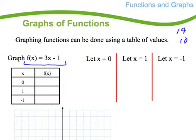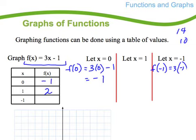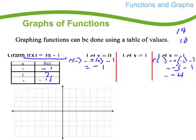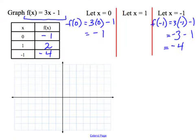If x = 0, then f(0) = 3(0) - 1 = -1. So when x is 0, f(x) is -1. If I plug in 1: 3(1) - 1 = 2. Next, f(-1) = 3(-1) - 1 = -3 - 1 = -4. So now I have three coordinates that I can graph: (0, -1), (1, 2), and (-1, -4).